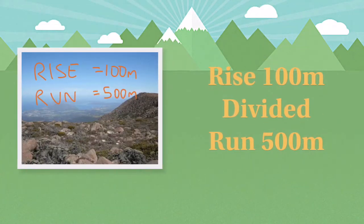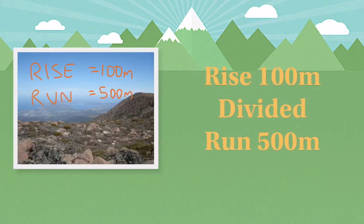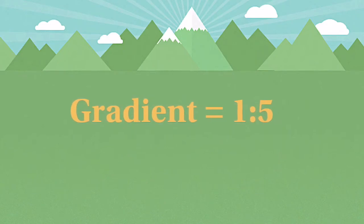So in our example rise is 100 metres and run is 500 metres. You divide rise by run and you receive a gradient of 1 to 5. In other words, for every metre you go up you need to walk 5 metres.